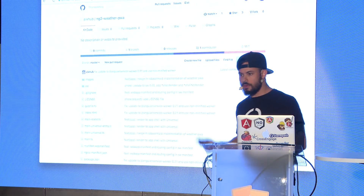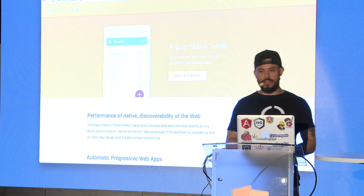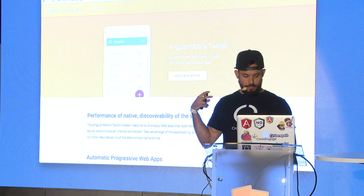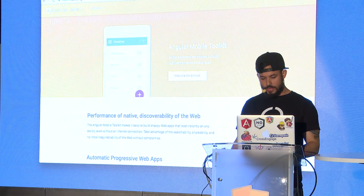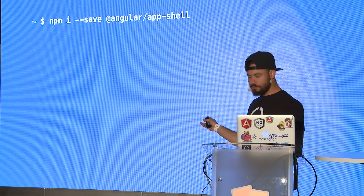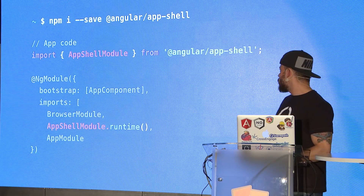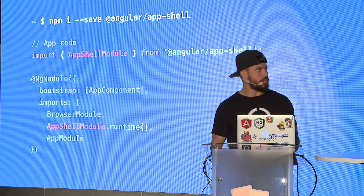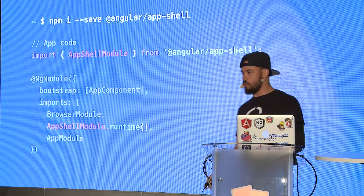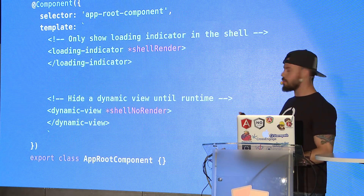Bootstrap is covered. Now, how to build the app shell? There's a project called Angular Mobile Toolkit, which provides a lot of useful stuff for building the app shell and more. To build the app shell, install the module — you can use yarn or npm — and this gives you the app shell module so you can import it using NgModules. You declare the app shell module as available on runtime.